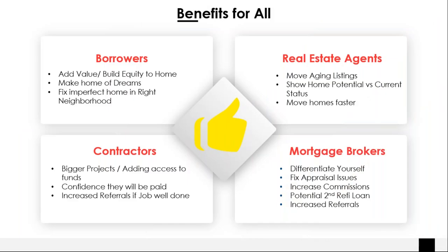Everybody benefits from a 203K loan. First-time homebuyers and borrowers are adding value and building equity right from the gate. Maybe they put $50,000 worth of renovations into a home and get $100,000 back in after-improved value — they just built $50,000 worth of instant equity. And borrowers looking for a particular neighborhood who can't find a home they like can look at a less-than-perfect home and envision it with a new kitchen, a new bathroom, new siding — making an imperfect home in the right neighborhood their dream home.